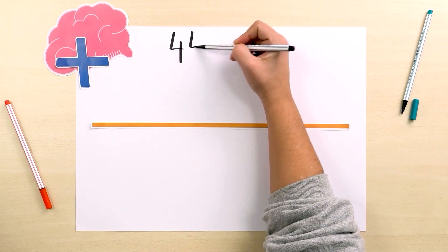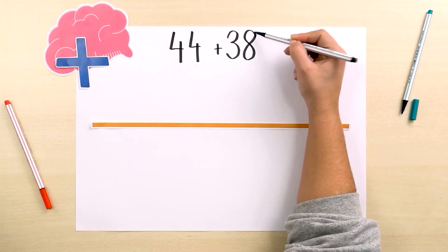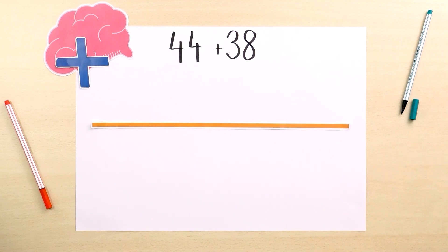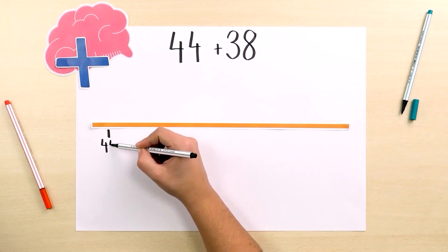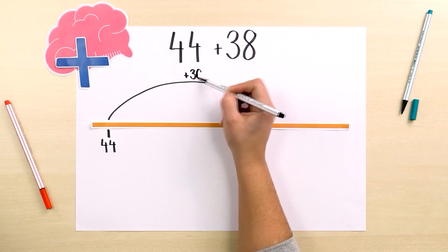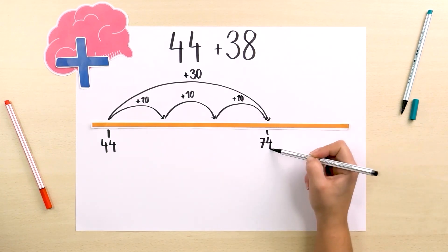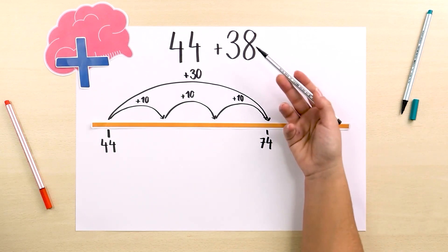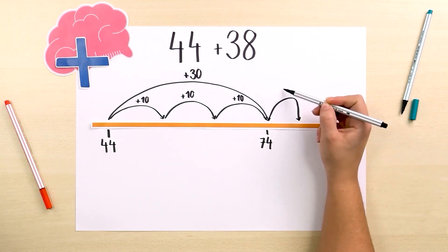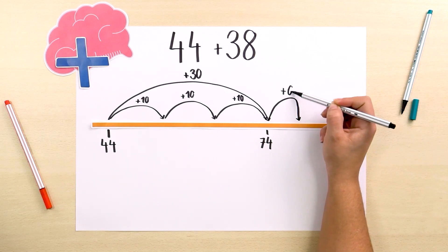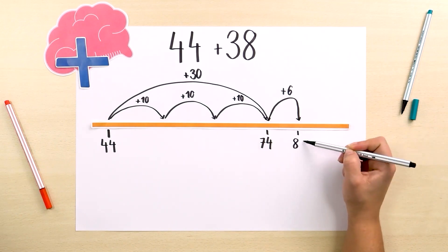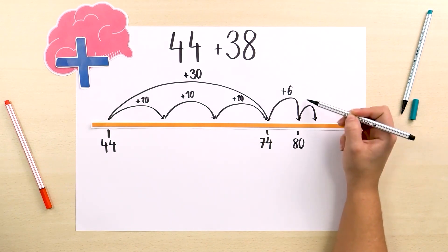Now let's try to solve 44 plus 38 using a number line. We can go to 44, make a jump of 30 forward, or 3 jumps of 10, to get to 74, and break down the jump of 8 into 2. One of 6 to get to 80, as we do with necklaces guided by the change in color, and another jump of 2 to get to 82.